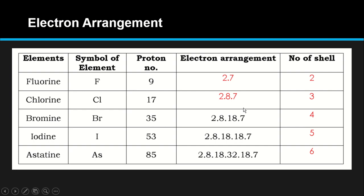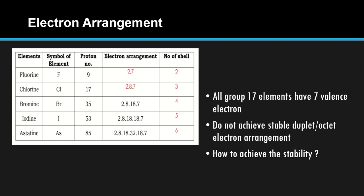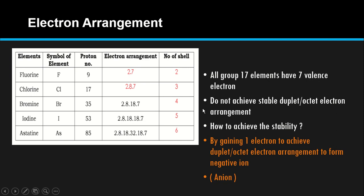Di sini kita boleh tengok dia punya number of shell akan bertambah as going down the group. Sebab proton number bertambah, jadi bilangan shell makin bertambah, size dia makin bertambah. So all Group 17 elements have 7 valence electrons. To achieve stability, dia kena gain 1 electron to achieve octet. Bila menerima elektron, dia akan form negative ion, iaitu anion.